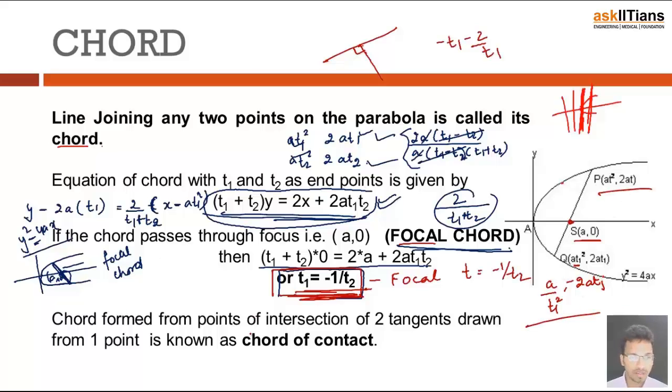Again we can see another term here which is known as chord of contact. And what is that? So from any external point, if we draw two tangents to a parabola, suppose like this, so if we join the two points of intersection, this is known as chord of contact.